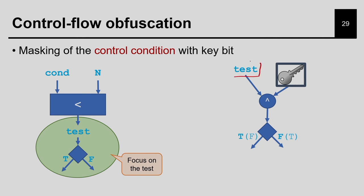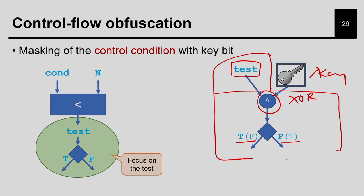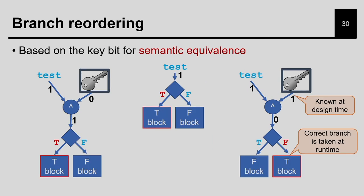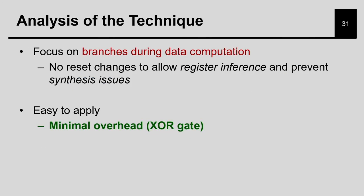This is the basic idea: you have this condition, you lock it with a key, and the XOR is added. If the key is 0 you keep the if-else block as it is; if the key is 1 you toggle the if block with else and the else block with if. Area overhead is just a XOR gate, so it is very minimum. And if you give a wrong key you will go to the wrong control branch and your whole output will change.